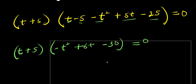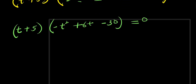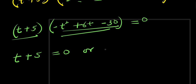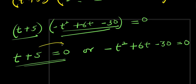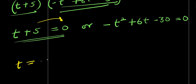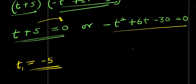We equate each bracket to zero. From t plus 5 equals 0, we move 5 to the other side and get t equals negative 5. That is our first solution, t₁. For the second bracket, negative t² plus 6t minus 30 equals 0. Since the coefficient of t² must be positive in the standard quadratic form, we multiply everything by negative 1 to get t² minus 6t plus 30 equals 0.